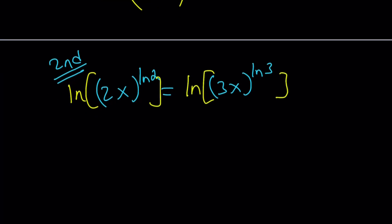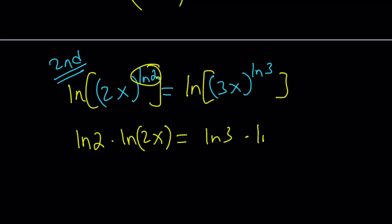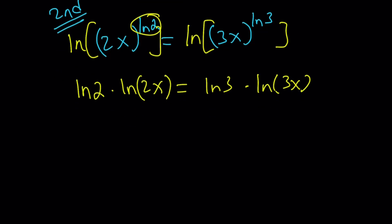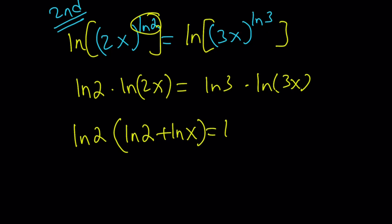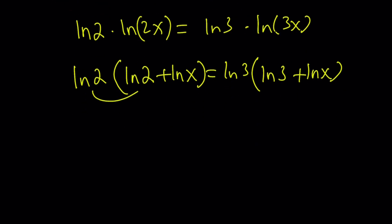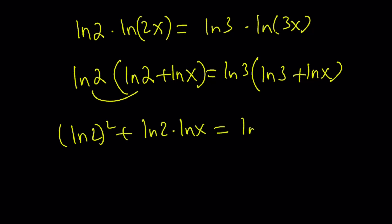We have 2x to the power ln2 equals 3x to the power ln3. Taking the natural log of both sides, using the power rule for logs, brings the exponent to the front: ln2 times ln(2x) equals ln3 times ln(3x). We didn't distribute the exponents this time, but we can still separate the x's using properties of logs. The log of a product equals the sum of two logs: ln2 times (ln2 plus lnx) equals ln3 times (ln3 plus lnx). Distributing gives ln2 squared plus ln2·lnx equals ln3 squared plus ln3·lnx.